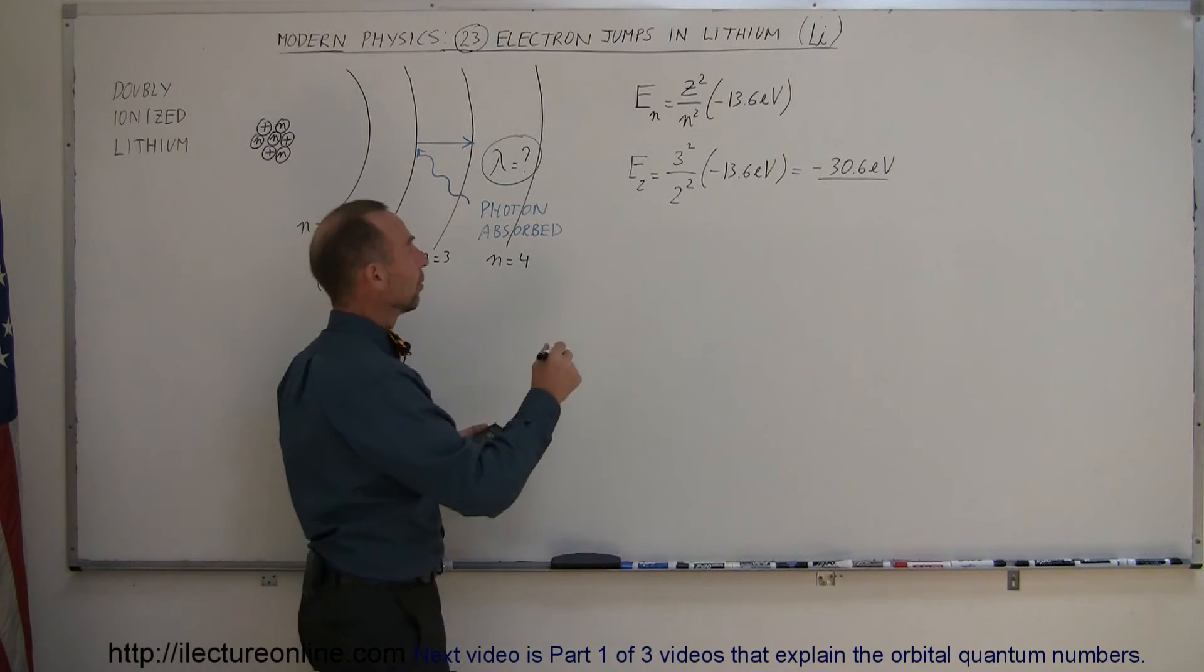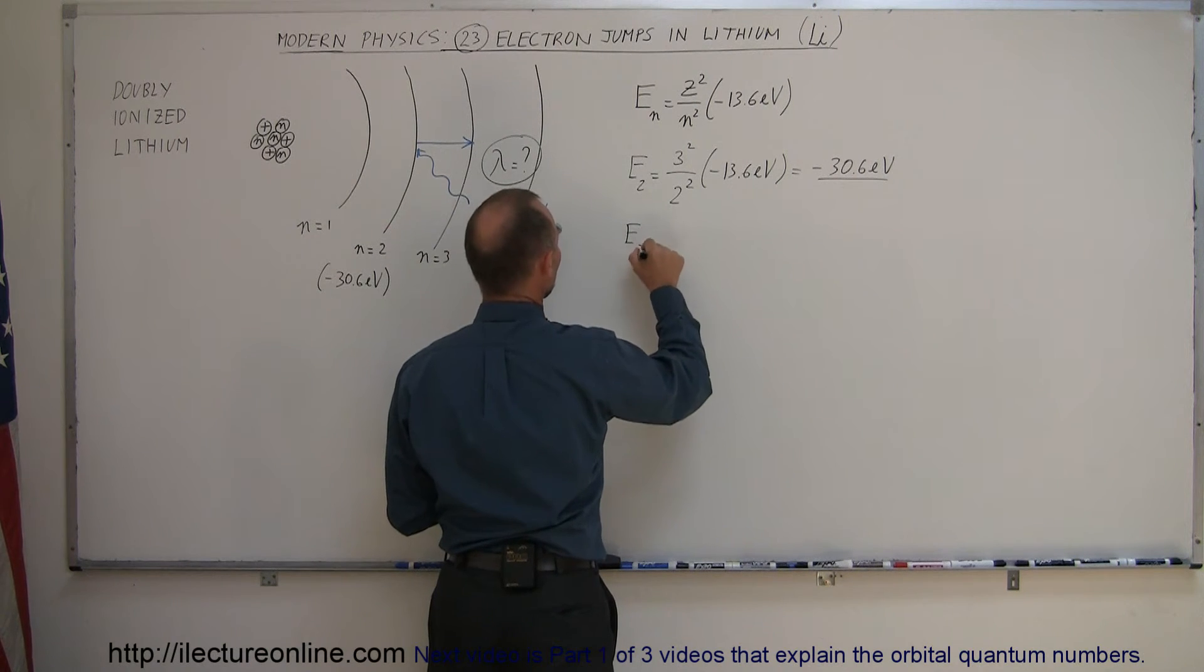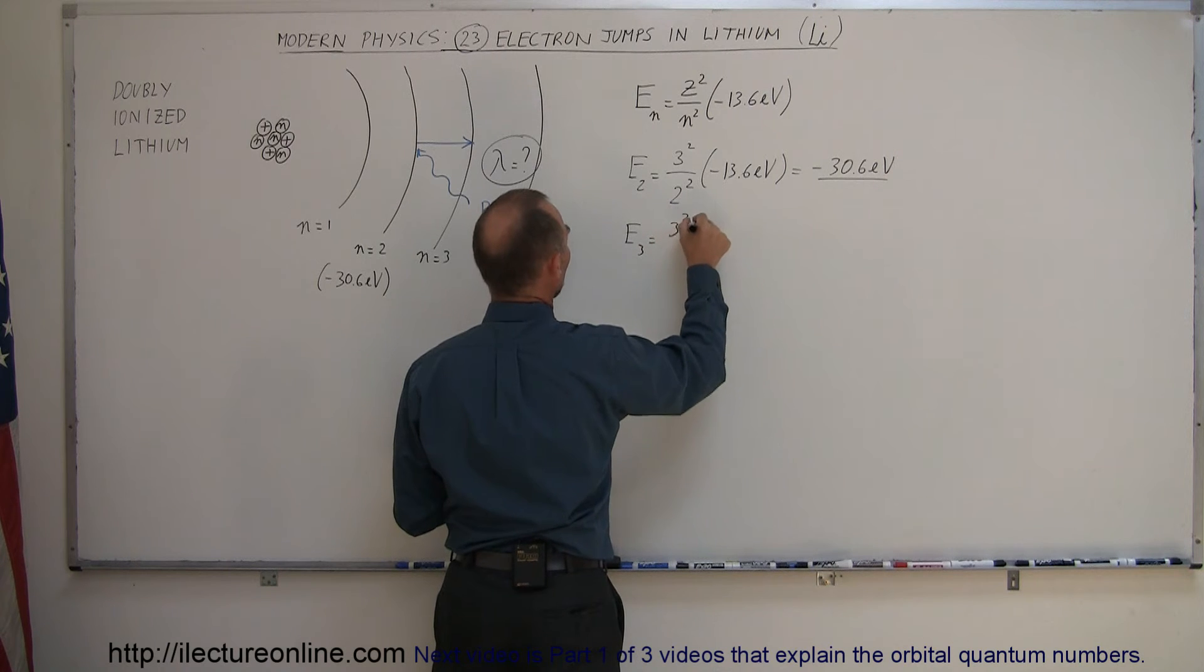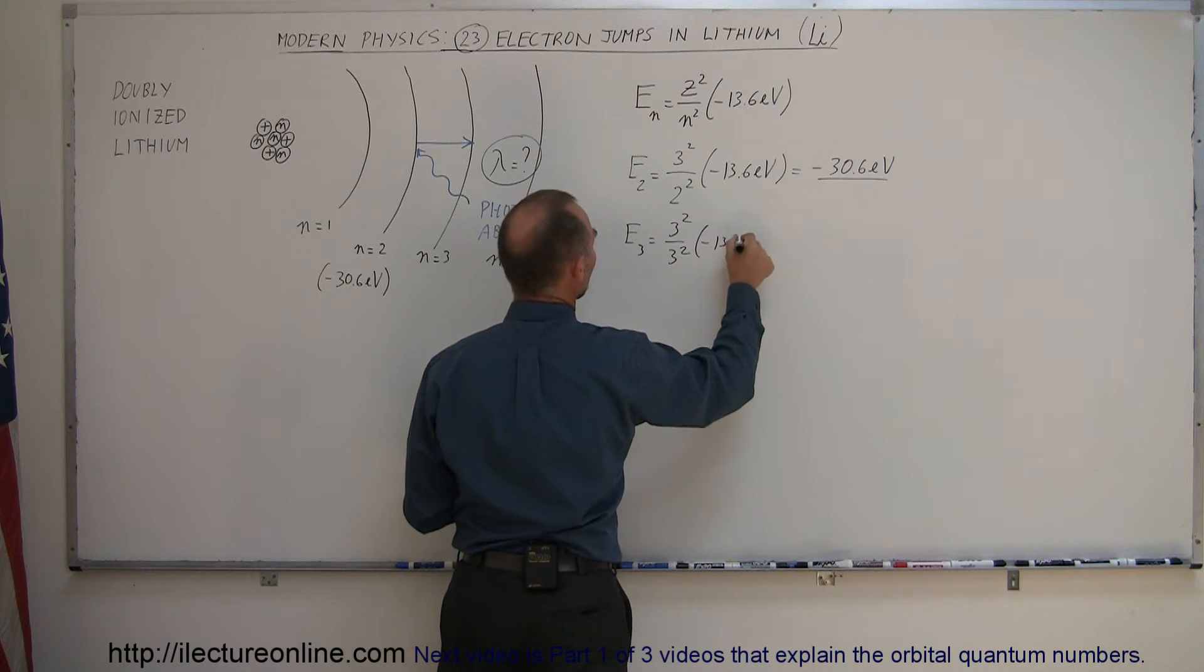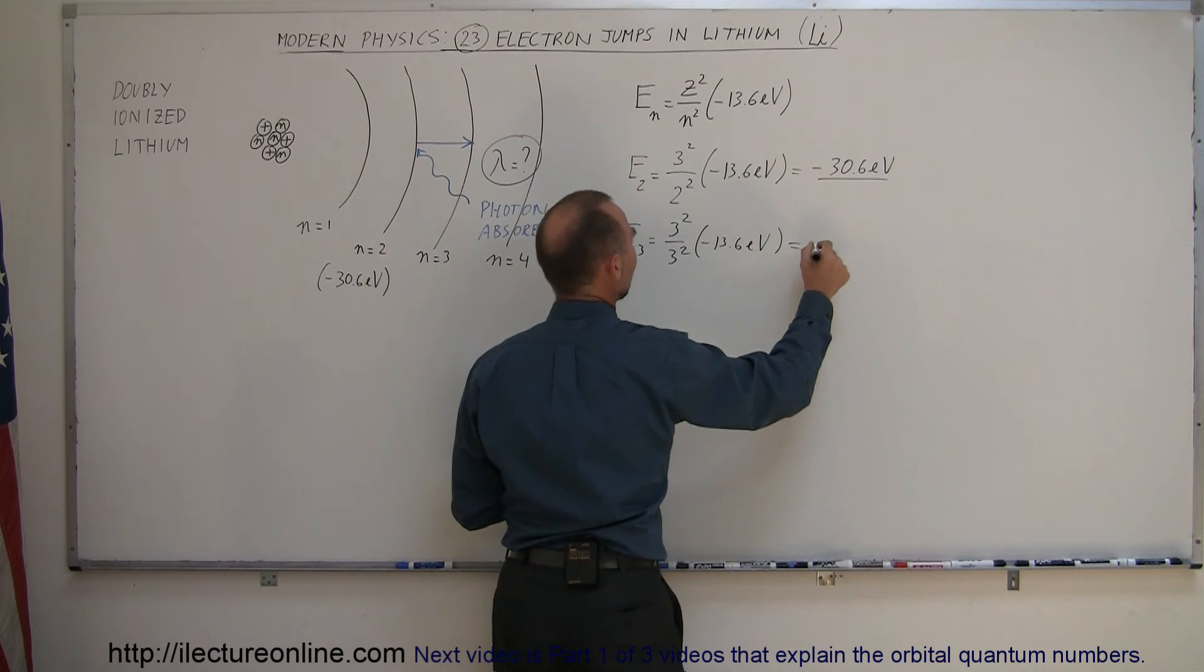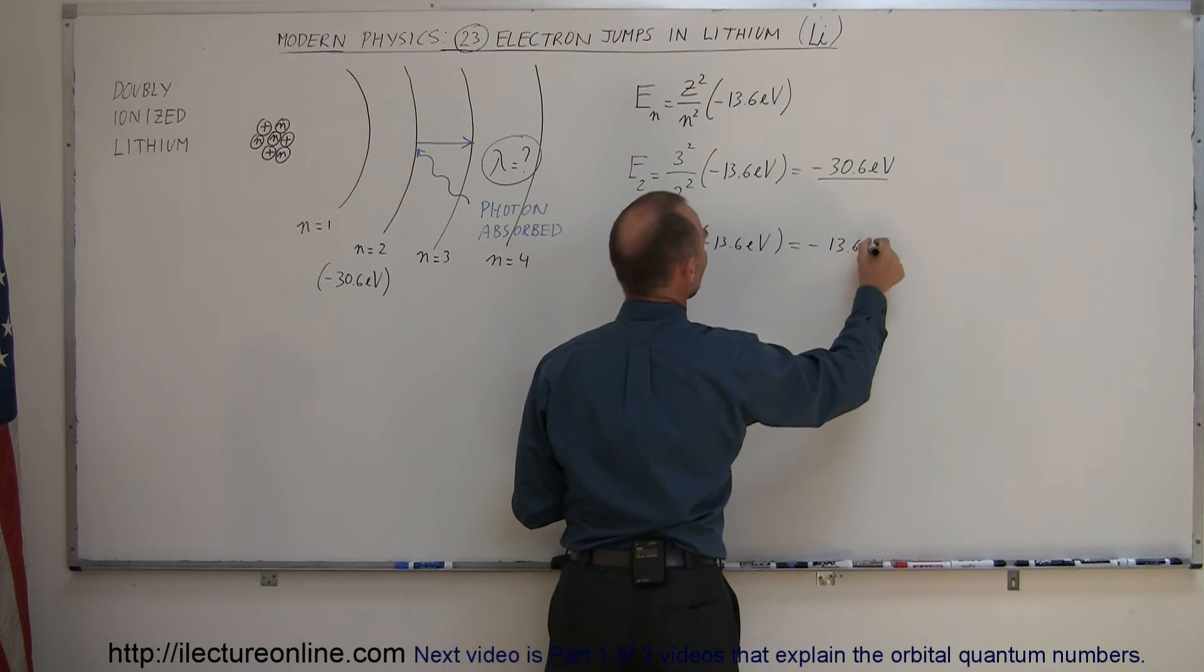Now, we want to find the energy of the third level. So, in lithium, E sub 3 is equal to 3 squared divided by 3 squared times minus 13.6 electron volts. And that's easy, that's minus 13.6 electron volts.